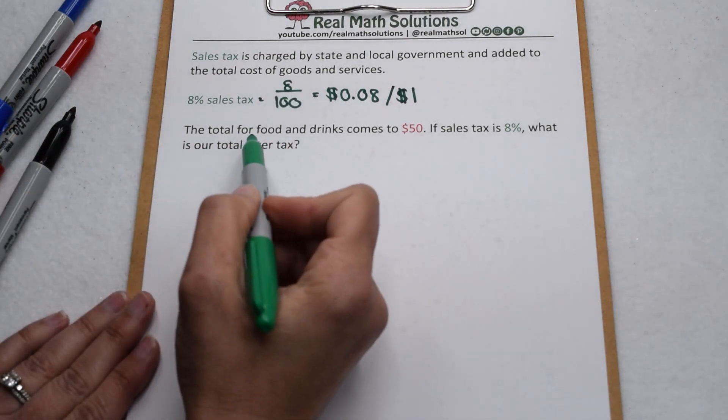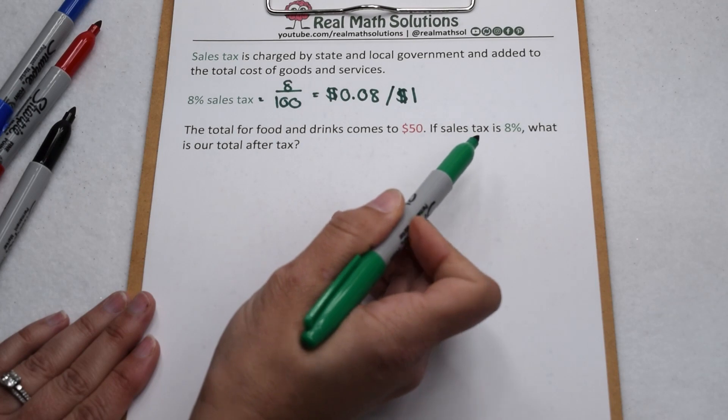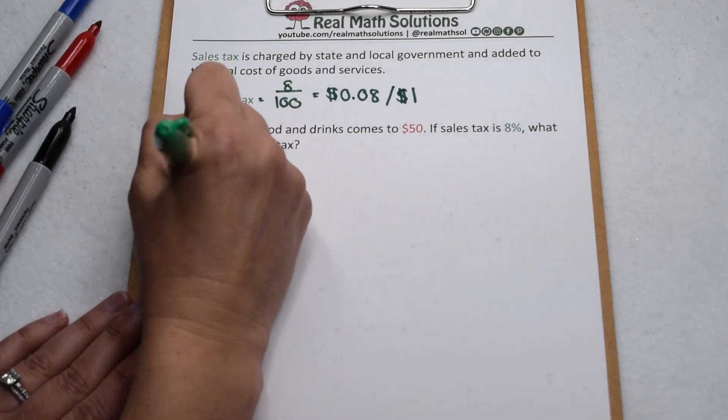Let's look at this in the real world. If our bill for food and drinks comes to $50 and sales tax is 8%, what is our total going to be after tax?